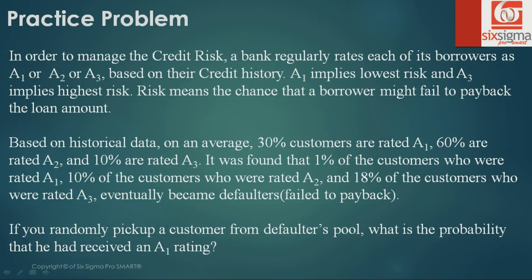Here's the problem. In order to manage credit risk, a bank regularly rates each of its borrowers as A1, A2, or A3 based on their credit history. A1 implies low risk and A3 implies highest risk. Risk means the chance that a borrower might fail to pay back the loan amount. Based on historical data, on average, 30% of customers are rated A1, 60% are rated A2, and 10% are rated A3. These are prior probabilities. It was found that 1% of customers rated A1, 10% of customers rated A2, and 18% of customers rated A3 eventually became defaulters. This is the conditional probability given to us.